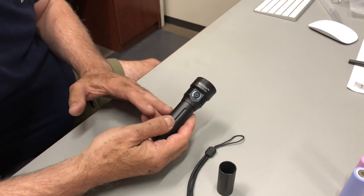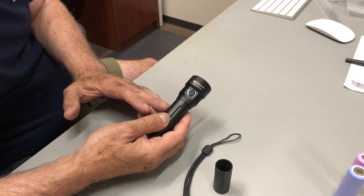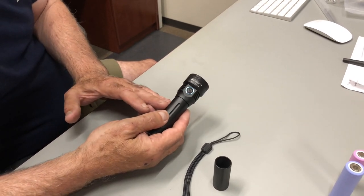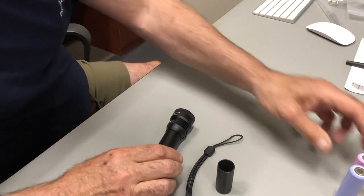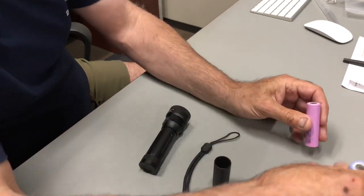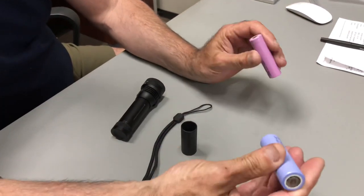And it's a flashlight that can take two batteries, two types of batteries. An 18650. I like the 18650s because they're pretty common. And it does not come with the batteries.